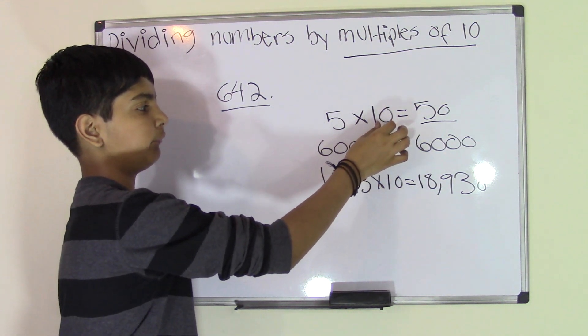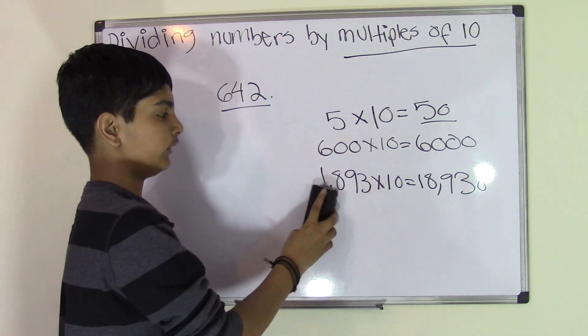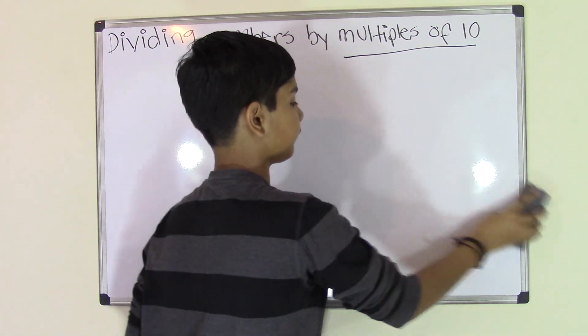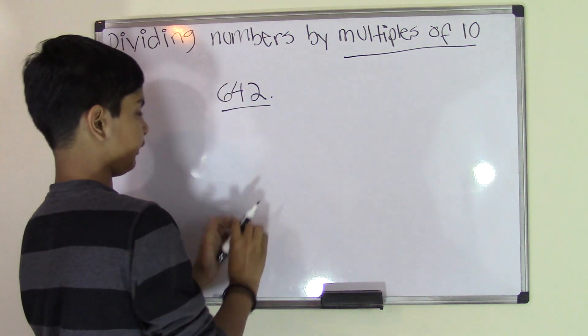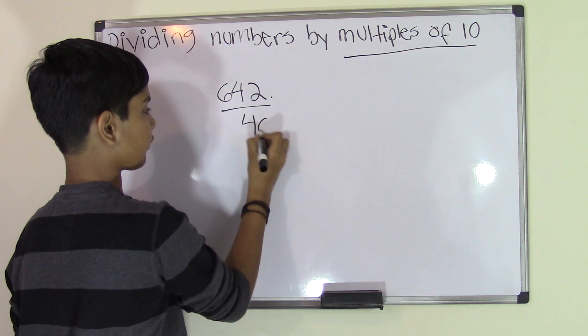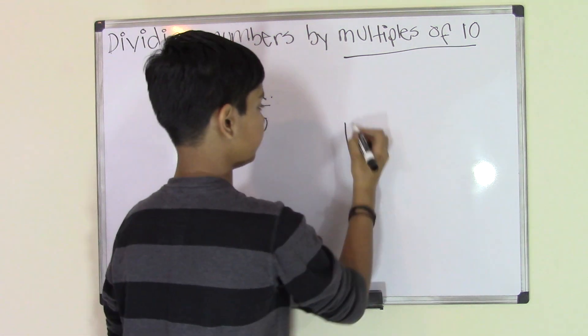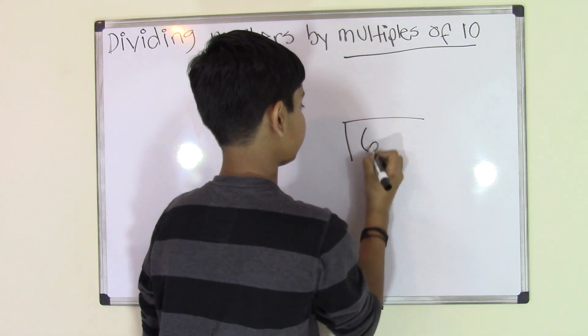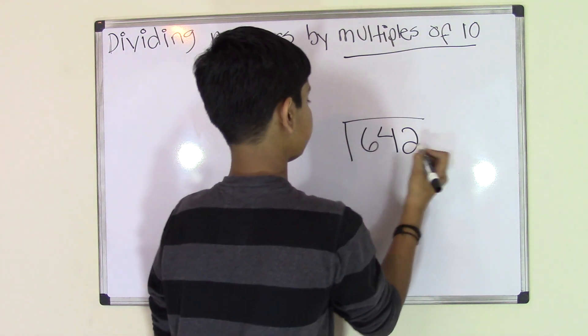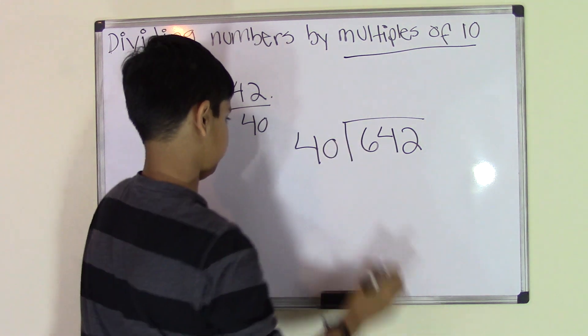For example, we have 40. 40 is a multiple of 10. Now let's write this in division form. So we write 642 as the dividend and 40 as the divisor.